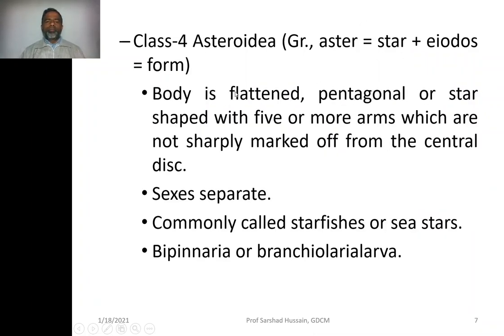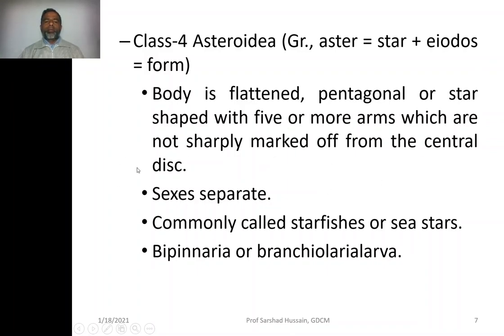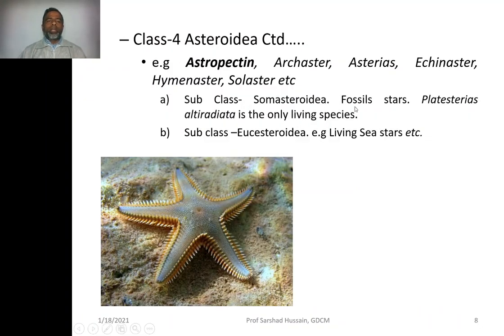Fourth class, Asteroidia. 'Aster' means star and 'eidos' means form, because they have a star-like appearance. Body is flattened, pentagonal or star-shaped, with five arms. The arms are not sharply marked off from the central disk. Sexes are separate. Commonly called starfish or sea stars. Bipinnaria or Brachioularia larvae are present in their life cycle. Examples include Asterias, Echinaster, Hymenaster, and Solaster.